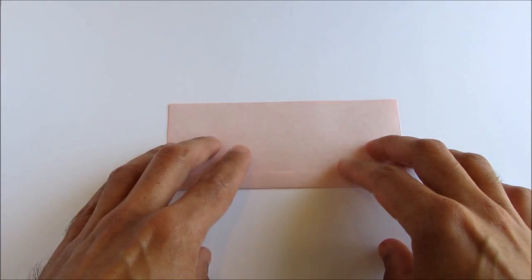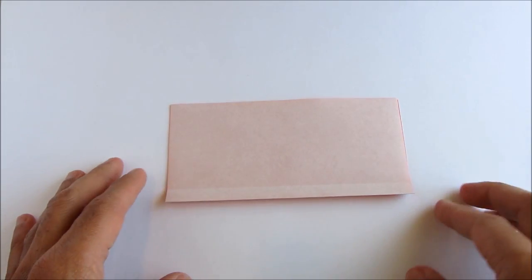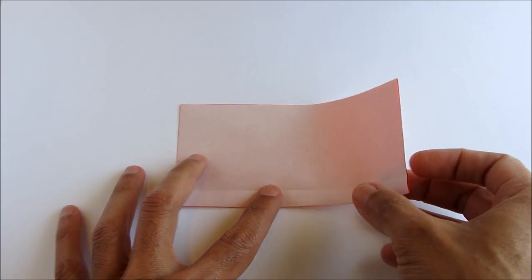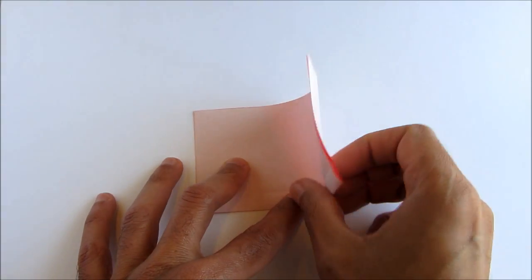Now unfold that last fold. We're going to fold the right edge of the paper across to the left, as we're showing here.